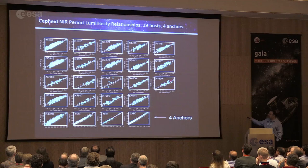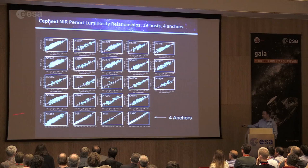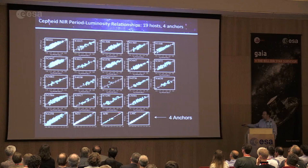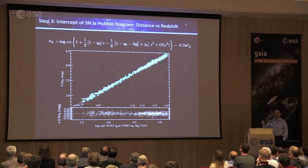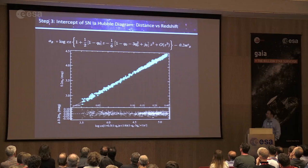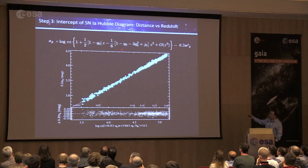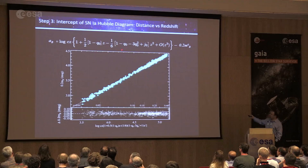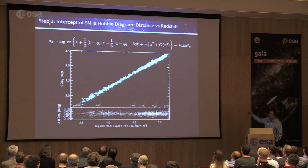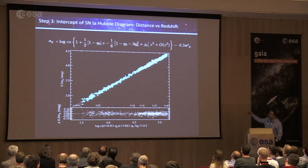Here are the period-luminosity relations for all 19 host galaxies and for the four anchors we can use: NGC 4258, Milky Way parallaxes to nearby stars measured a decade earlier by Fritz Benedict using the Fine Guidance Sensor, the Large Magellanic Cloud, and M31. The third step uses calibrated supernovae to measure the expansion rate of the universe. Here is the nearby supernova Hubble diagram — distance versus redshift. We fit a slightly more complex model than simple Hubble law, accounting for the changing expansion rate using q-naught and j-naught from higher-redshift supernovae.